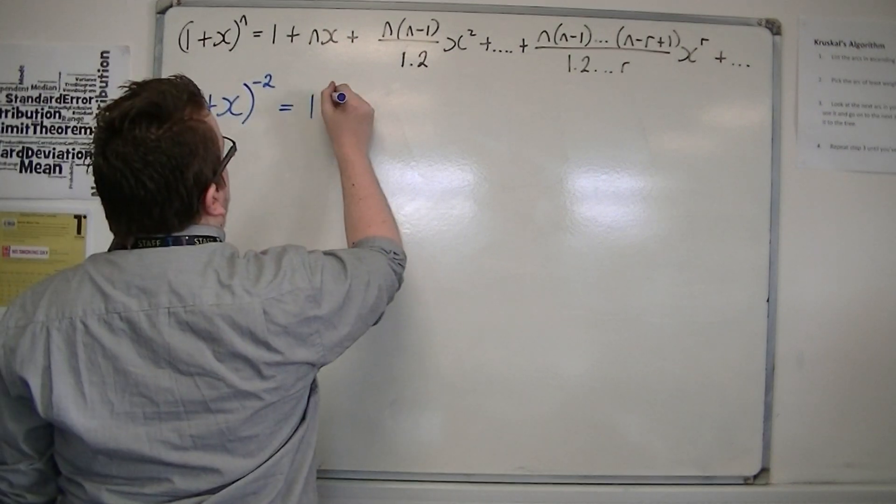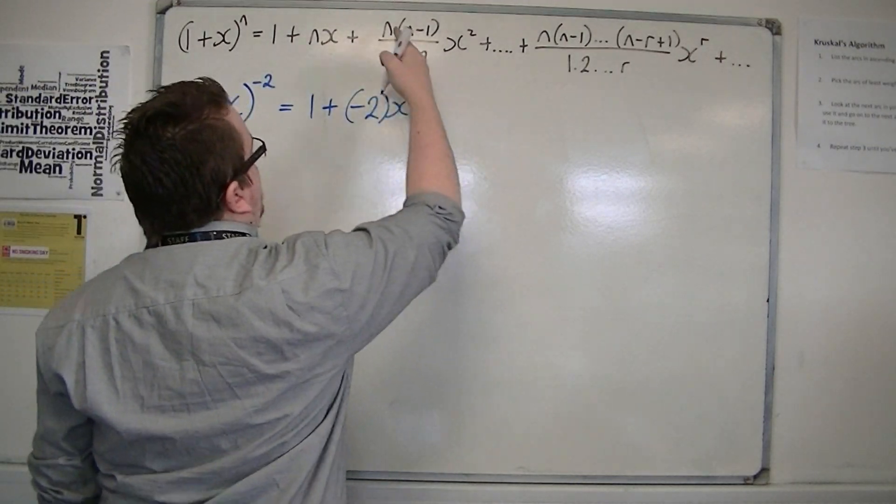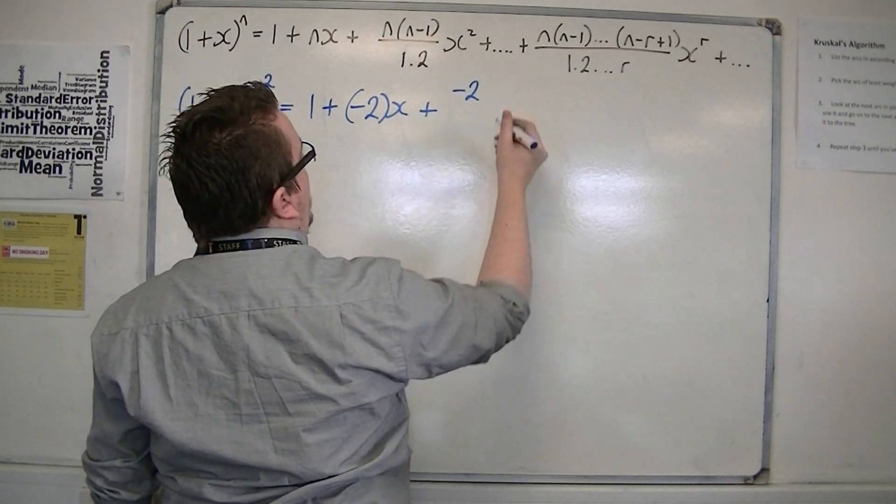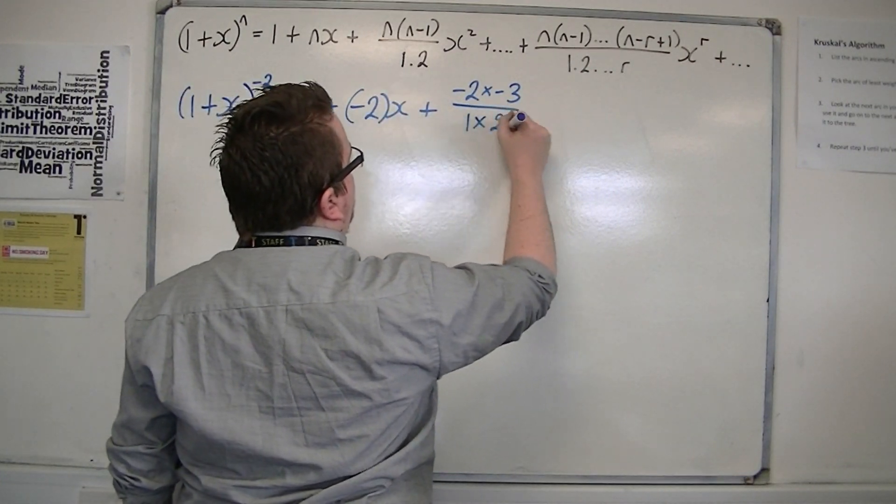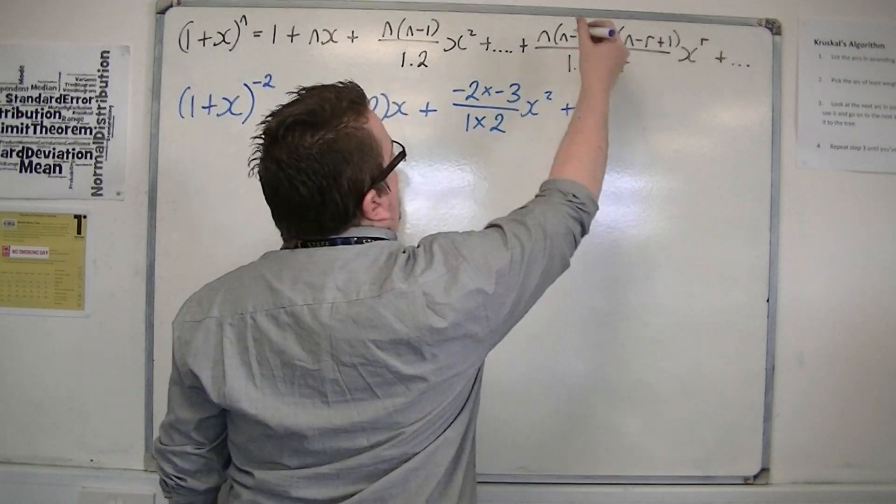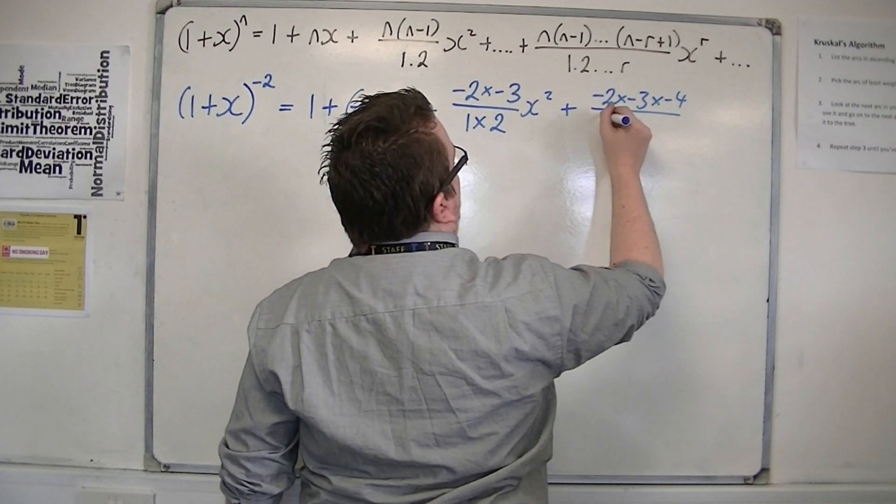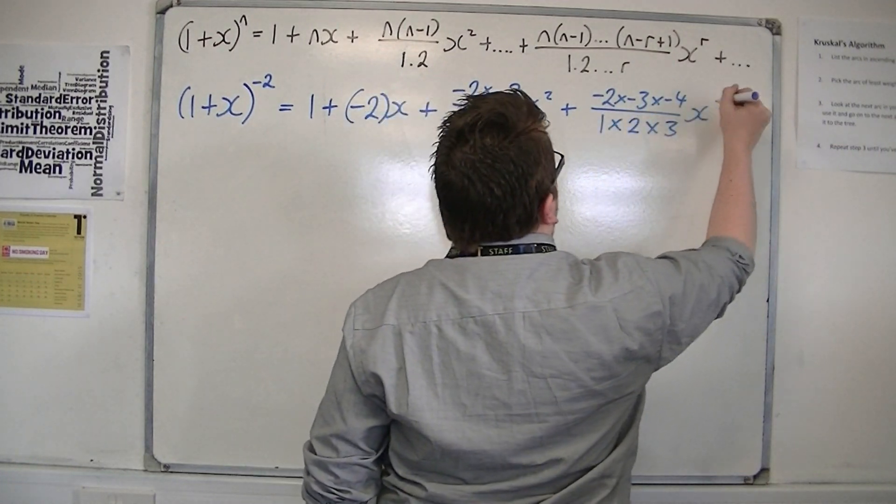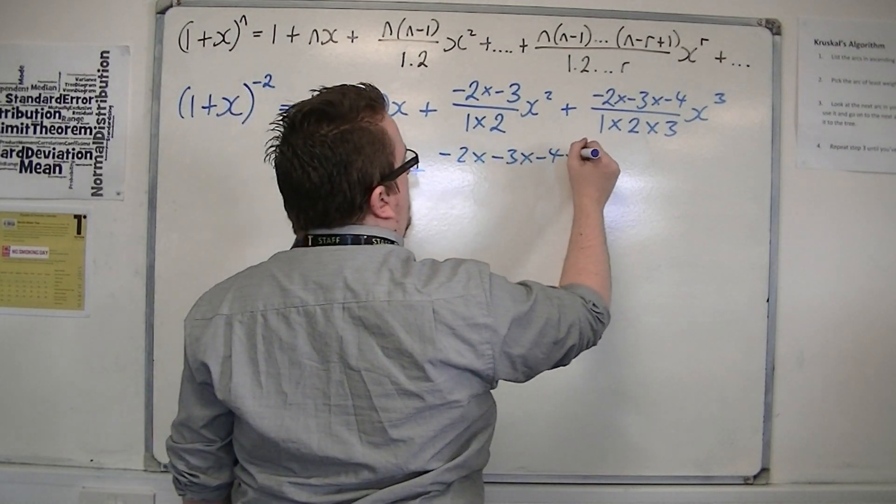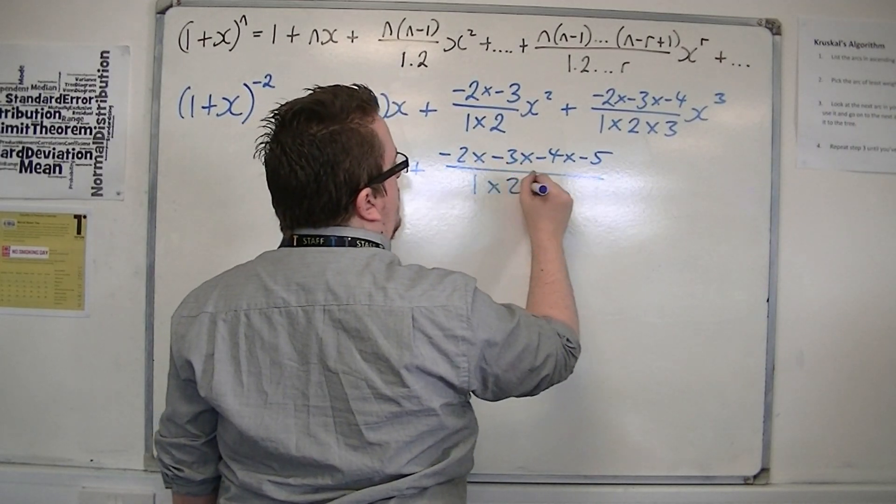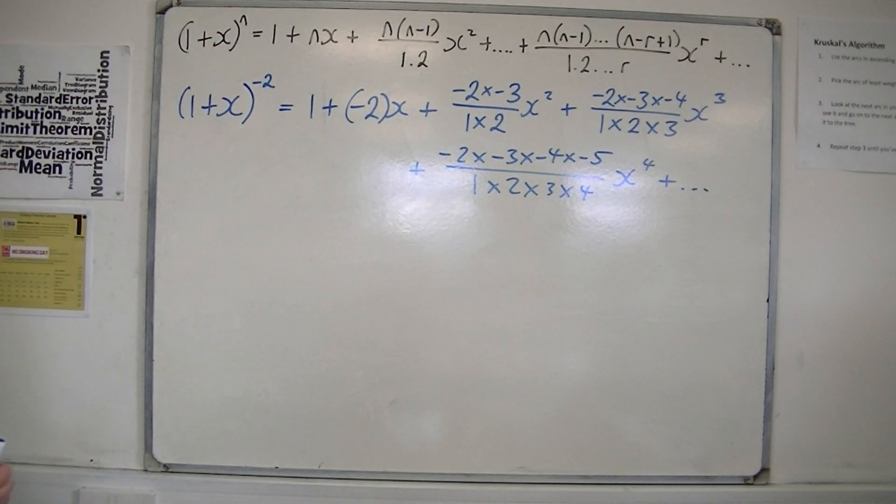So I get 1 + n times x, so -2 times x, plus -2 times (-2 - 1), so -3, over 1 times 2, times x², plus -2 times -3 times -4 over 1 times 2 times 3, times x³, plus -2 times -3 times -4 times -5 over 1 times 2 times 3 times 4, x⁴, etc.